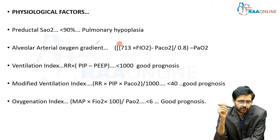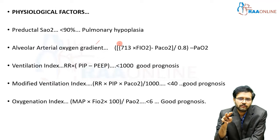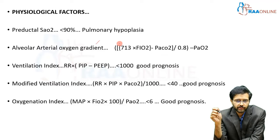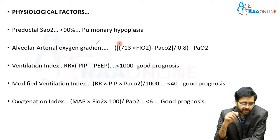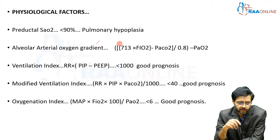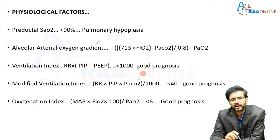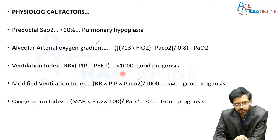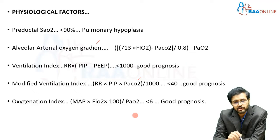The ventilation index is calculated by multiplying the difference between peak inspiratory pressure and PEEP by the respiratory rate. If the value is less than 1000, it carries a good prognosis. The modified ventilation index incorporates hypercapnia: respiratory rate multiplied by peak inspiratory pressure multiplied by the partial pressure of carbon dioxide, divided by 1000. If that value is less than 40, it carries a good prognosis.